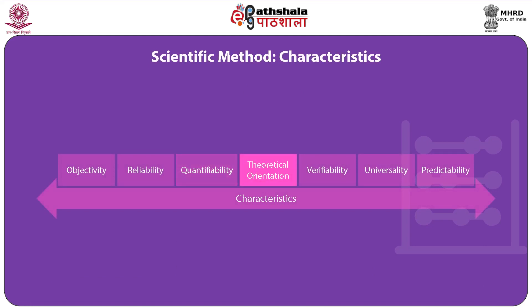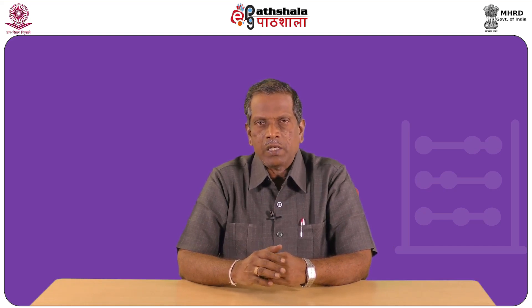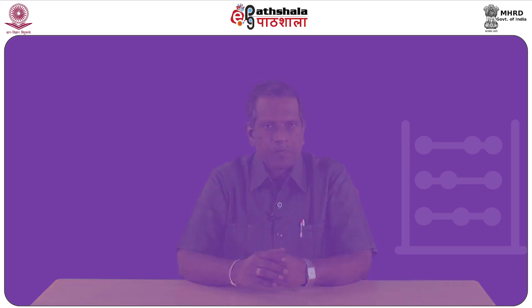The next characteristic is theoretical orientation. Science as a body of knowledge is characterized by orientation to theory. The major objective of science is to find and produce a body of propositions that are logically and systematically interrelated in order to explain some broad category of phenomena — that is, to build theory.